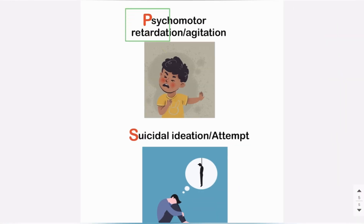P for psychomotor retardation or agitation. Psychomotor retardation means that a person slows down, so patients with depression tend to have slow speech and decreased motor activity. Psychomotor agitation means that the person becomes irritable and aggressive.